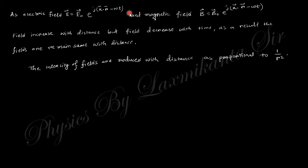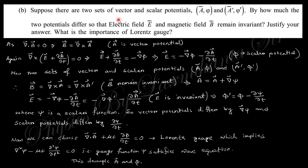Next question: suppose there are two sets of vector and scalar potentials — A and A' as vector potentials, and φ and φ' as scalar potentials. By how much do the two potentials differ so that the electric field E and magnetic field B remain invariant? Justify your answer. What is the importance of the Lorentz gauge? You need to find the difference in these potentials when E and B are kept invariant.